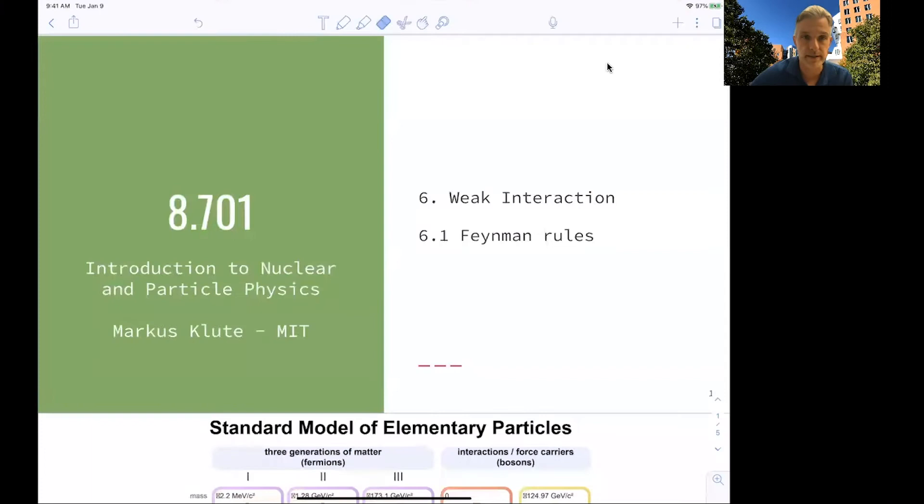Welcome back to 8.701. In this lecture, we open a new chapter: the weak interaction. We are one by one adding together the components we need in order to describe all elementary particles and their interactions. So now we're adding the third form of interaction. After QED and QCD, we enter into the discussion of the weak interaction.